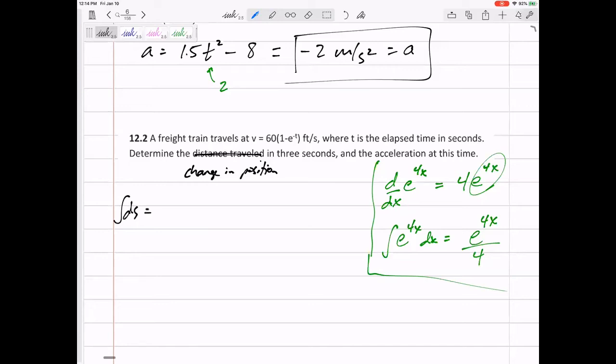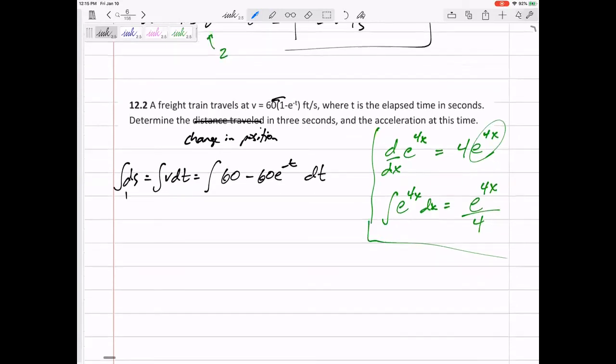How about this one? We'd say the integral of ds equals the integral of v dt. So, the integral of 60 times (1 minus e to the negative t). I'm going to go ahead and multiply the 60 through: 60 minus 60e to the negative t. So, I'm taking the integral of this.